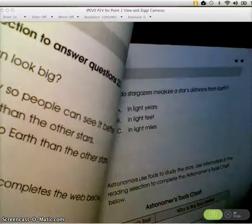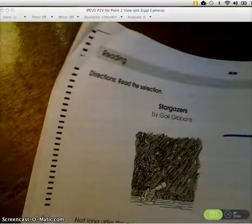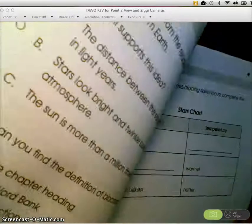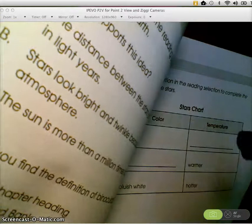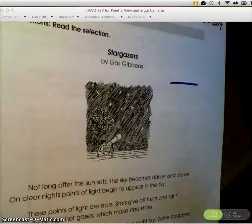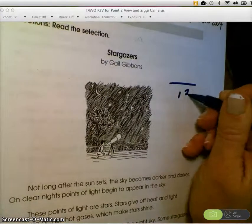Count them up. 1, 2, 3, 4, 5, 6, 7 on the 4 pointer. 8, 9, 10 and then there's a 2 pointer, 11, 12, 13. 13 points total. So 13 becomes your denominator.